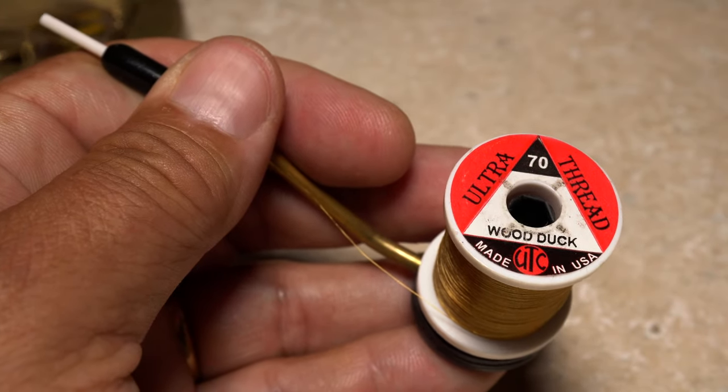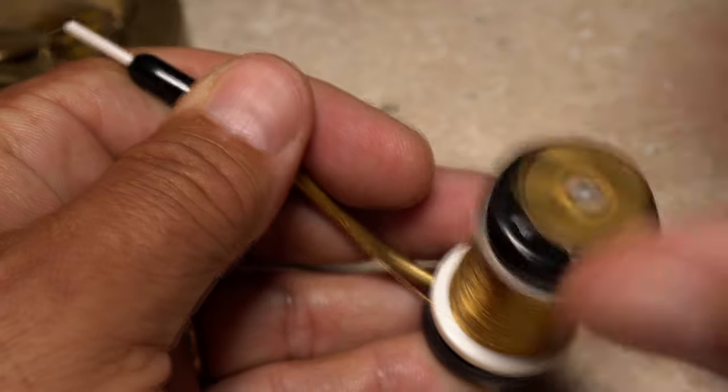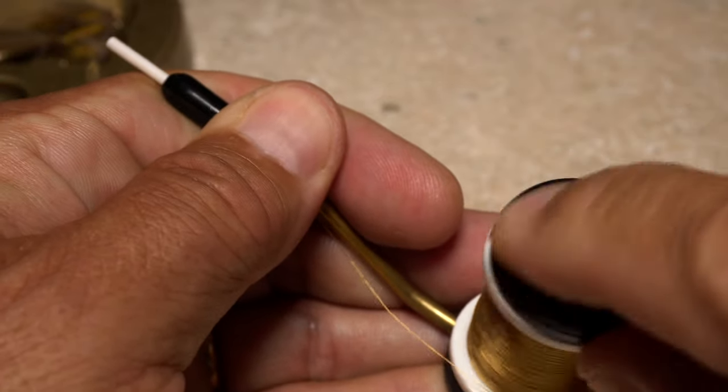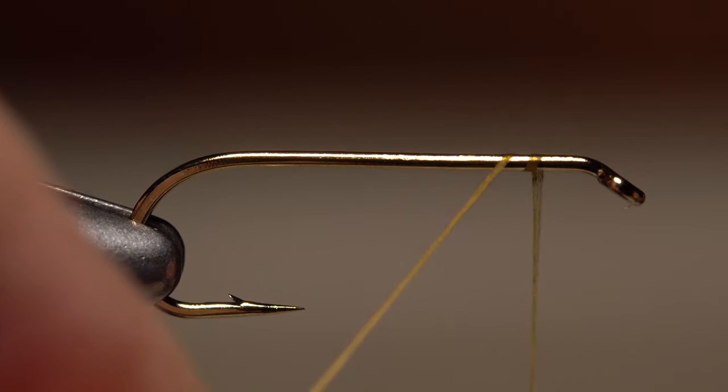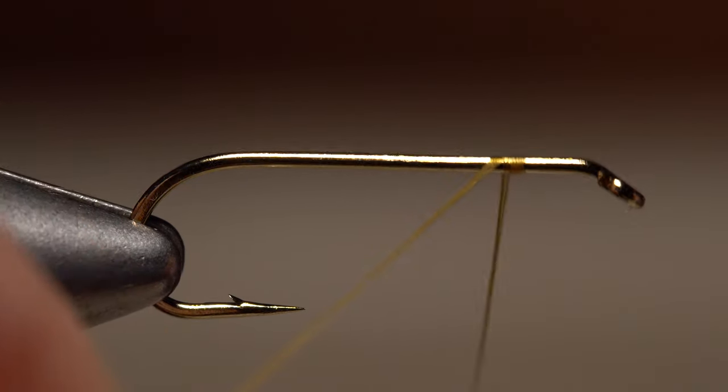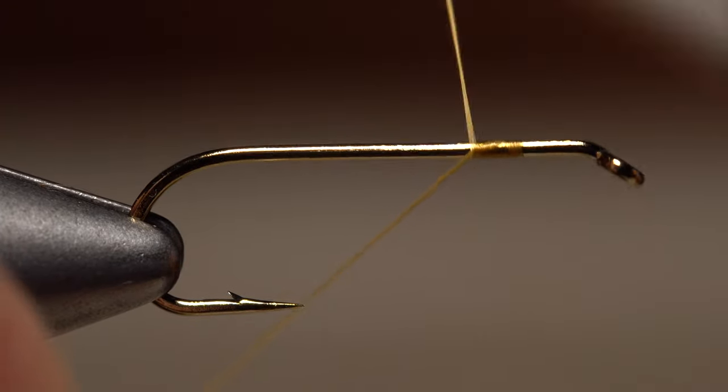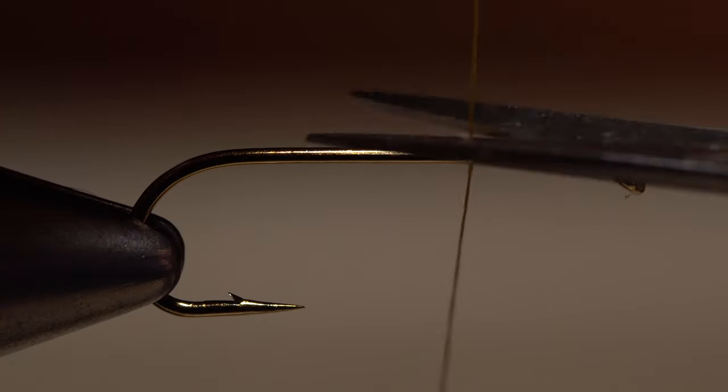For thread, I've loaded a bobbin with a spool of UTC 70 denier in one of my favorite colors called Wood Duck. Start your thread on the hook shank, leaving a two eye length space behind the hook eye. Then take a few reps rearward before snipping or breaking off the tag.